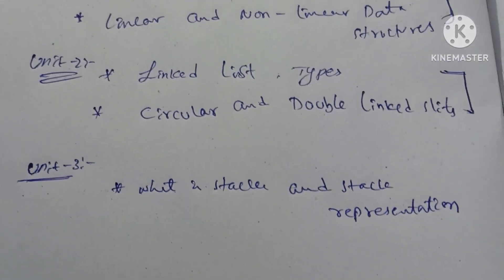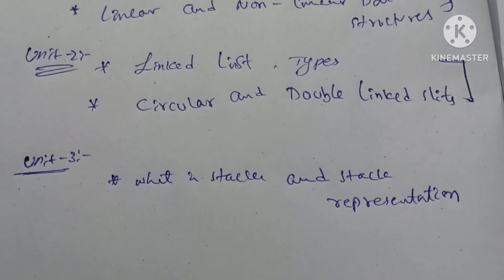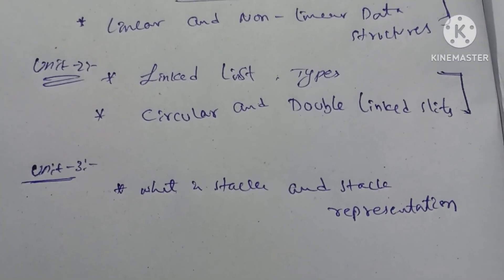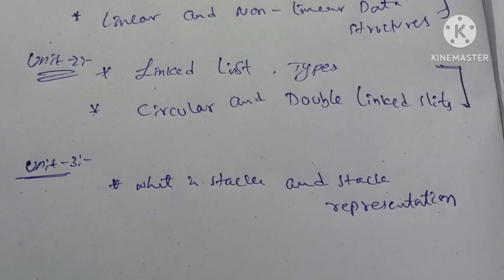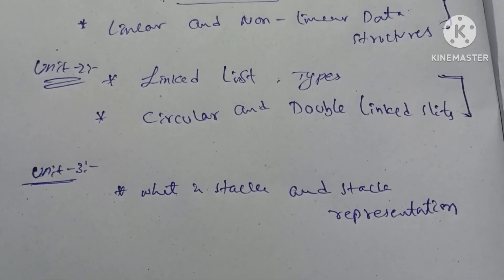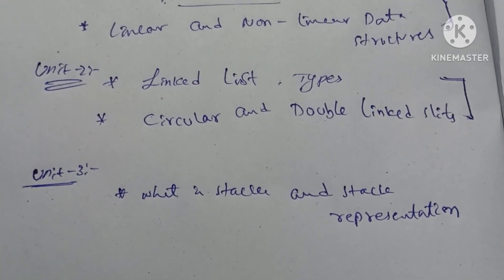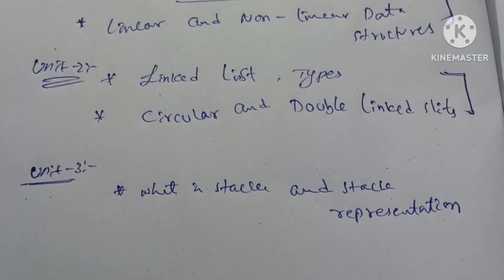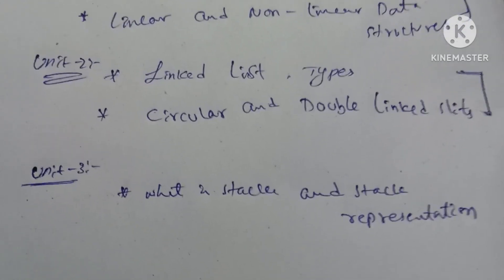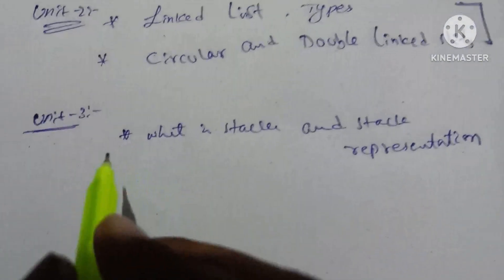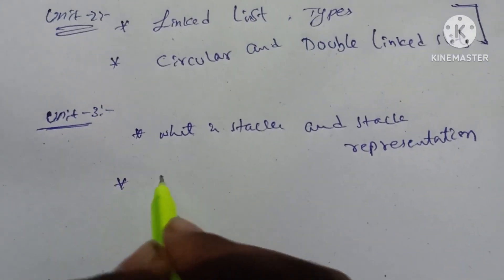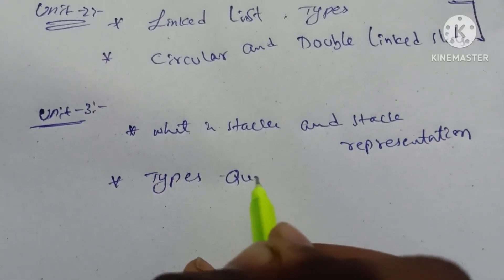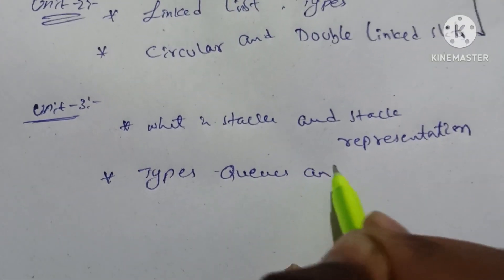If you verify all university papers and check some important questions, you can review them. This covers all universities. What is stack and stack representation? You can save Unit 3. Types of queues and its applications are also covered.